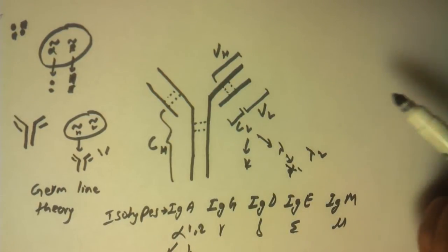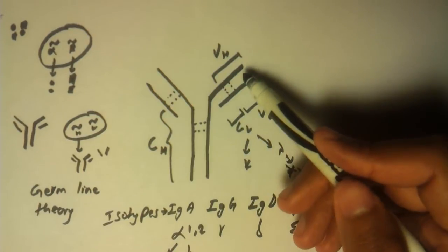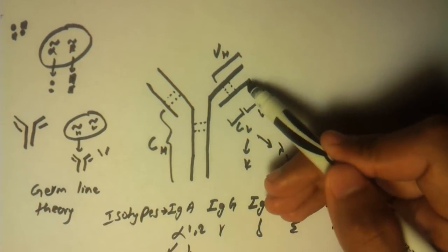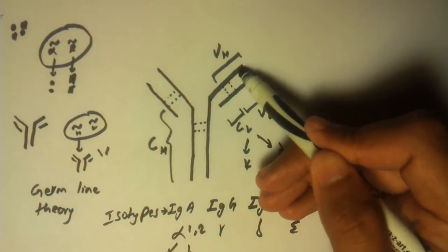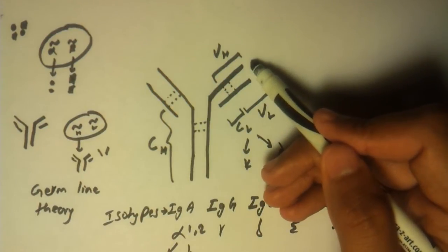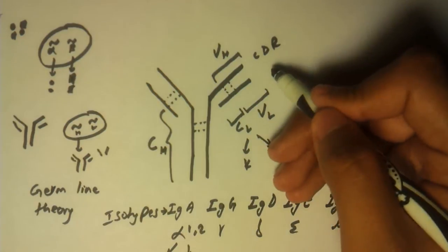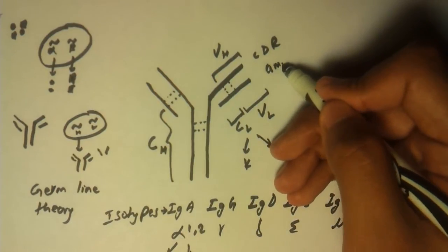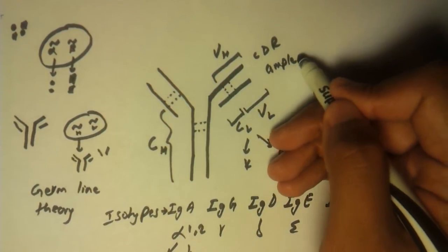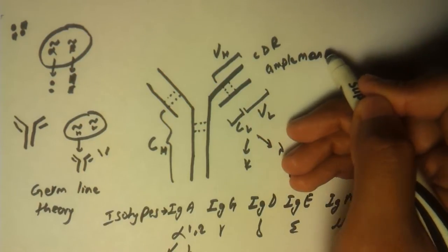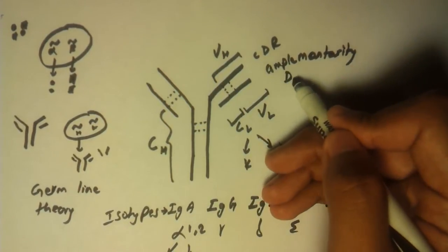Now even in our variable region, the top part of variable region is really, really variable, and it's also called CDR, or complementarity determining region.